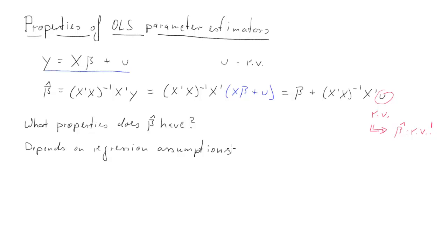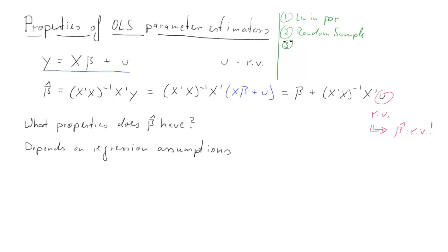We're going to start with a brief review of what these assumptions are. The first assumption requires that our model is linear in parameters — given our model y equals x beta plus u, that is clearly satisfied. The second refers to sampling: we assume we have random samples, so observations are sampled randomly and are not dependent. The third requires no perfect collinearity in our explanatory variables, equivalently a full rank matrix x.